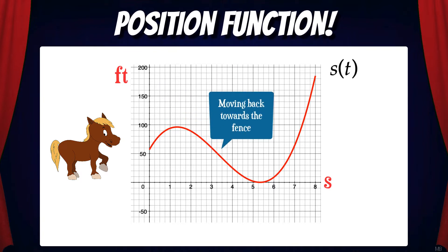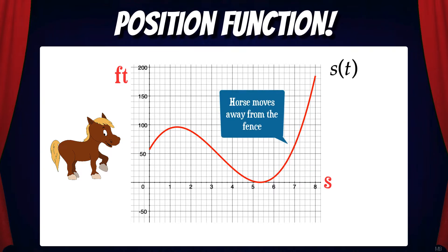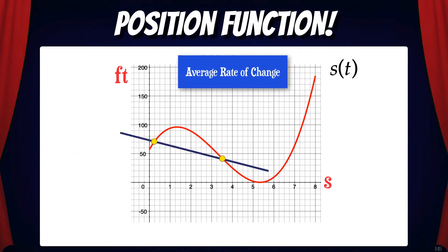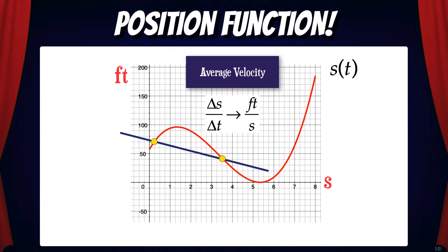Then the horse starts moving back towards the fence, and between t equals 5 and 6, the horse is touching the fence, because its position is 0 feet from the fence. Then the horse moves away from the fence. Now let's find the average rate of change on an interval. What we're doing here is finding the slope of a secant line. When we do this, we get the change in position over the change in time, and the units are feet per second. The change in position over the change in time is also known as the average velocity.